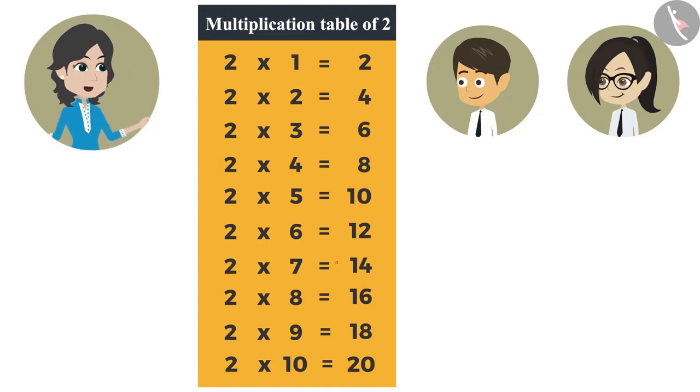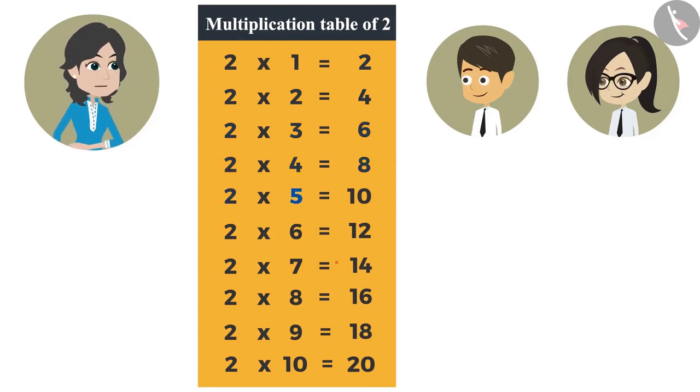We remember the table of 2 like this. 2 1's are 2, 2 2's are 4, 2 3's are 6, 2 4's are 8, 2 5's are 10, 2 6's are 12, 2 7's are 14, 2 8's are 16, 2 9's are 18, 2 10's are 20.